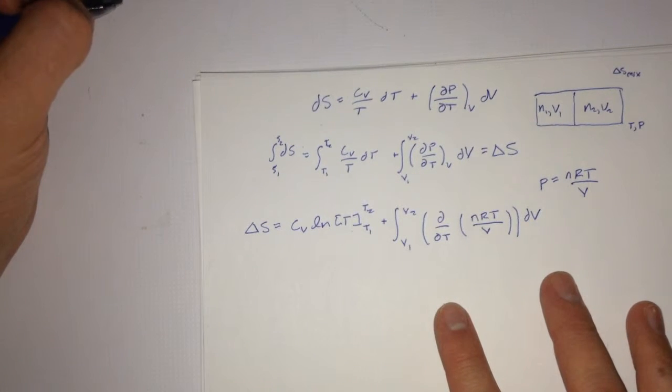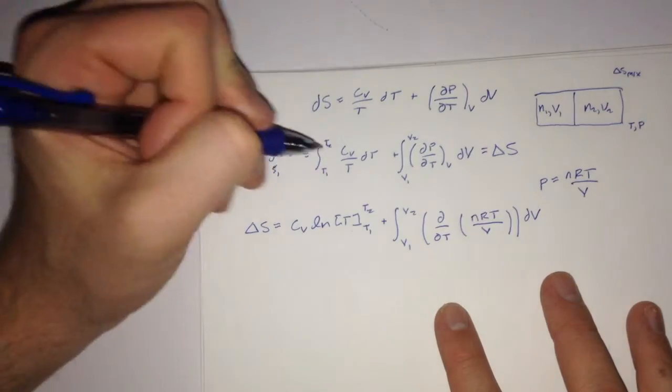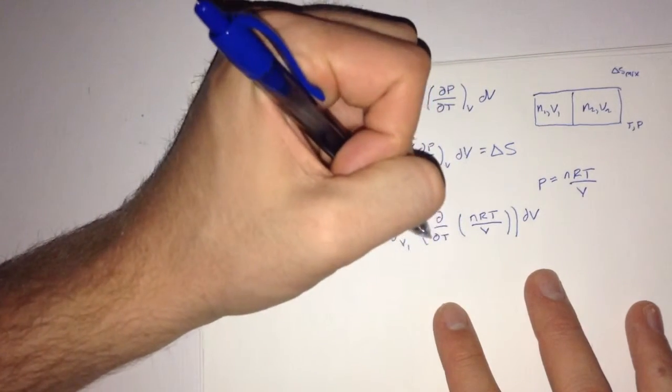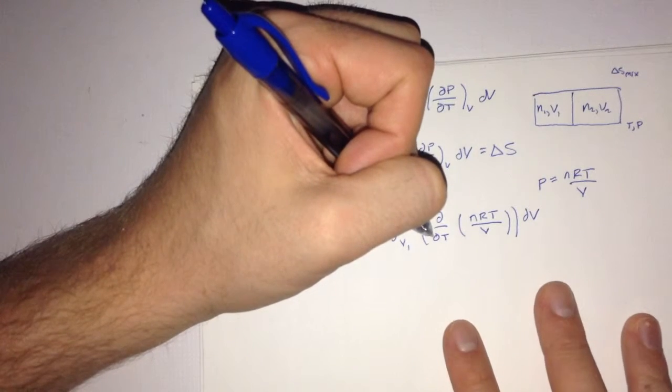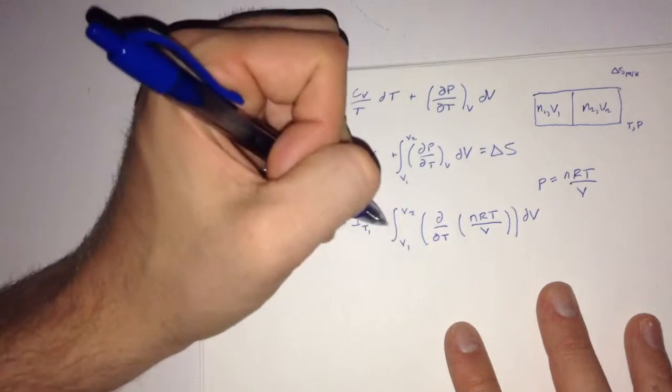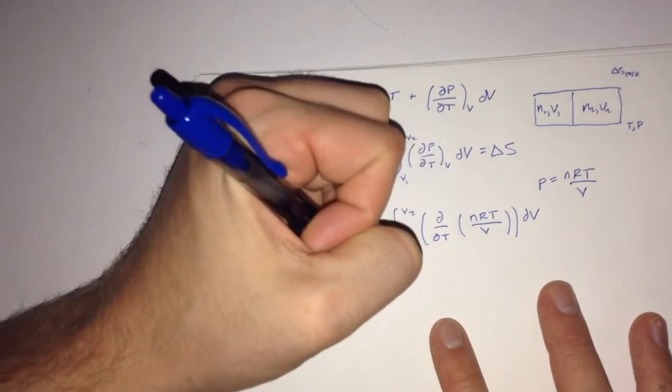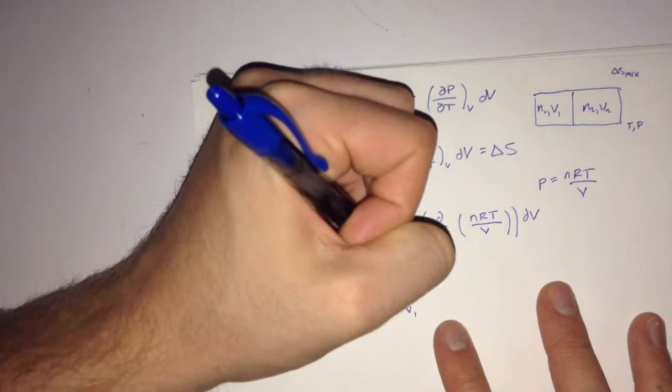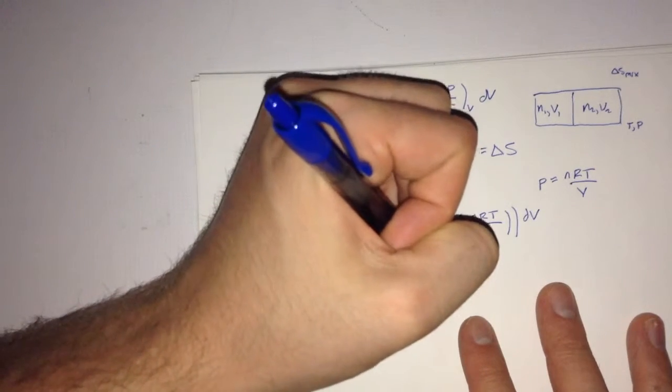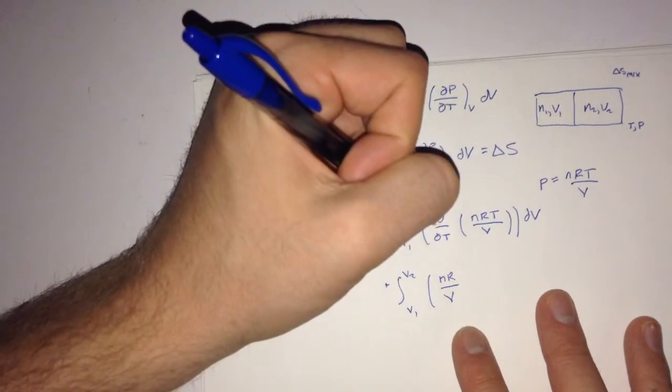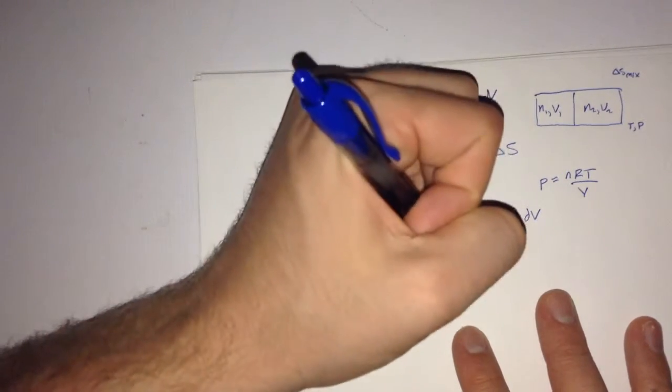Another thing that we can notice is that since in this partial derivative right here, we're only taking it with respect to t, that means nR and v are constant in this. And so we can pull out those terms as well. And that will leave us with dt of dt.